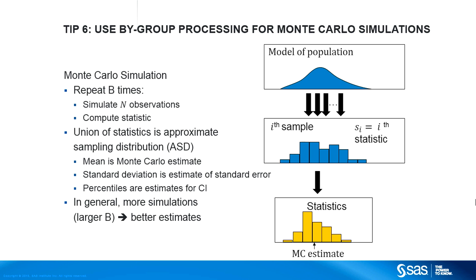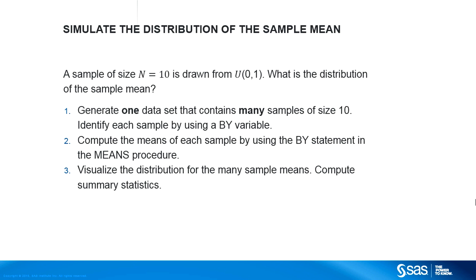Tip number six: to carry out a Monte Carlo study, do the following. One, draw a sample from a known distribution. Two, compute a statistic on the sample. Three, repeat this process many times to create an approximation to the sampling distribution of the statistic. How can we do this efficiently in SAS? The answer is to use by-group processing. Generate 1,000 samples in a single data set, with each sample marked by using an ID variable. Then, you can use a by-variable in the analysis procedure to run 1,000 analyses and save the statistic of interest for each by-group in an output data set. The distribution of the 1,000 statistics approximates the sampling distribution of the statistic.